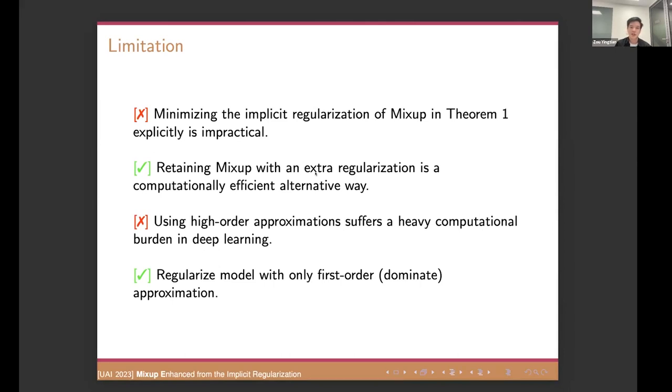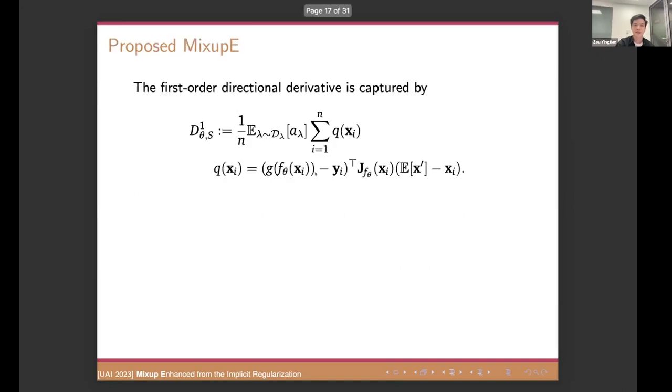Well, if you consider or if you believe that imposing the implicit regularization will give you a better generalization, then you can believe that our proposed algorithm is surely better than the standard mixup, right? Actually, we proved it. Okay. Let's discuss the limitation that arise when attempting to devise the algorithm directly from our theorem one. The first disadvantage is minimizing the implicit regularization of mixup in theorem one explicitly is actually impractical, right? Because it involves a large number of the derivatives. So the alternative way is to retain the mixup with an extra regularization that is more computational efficient.